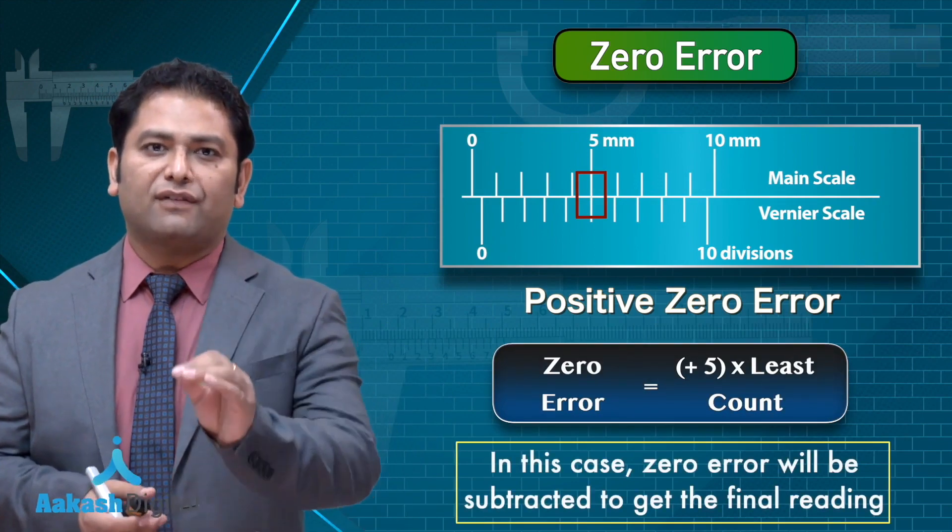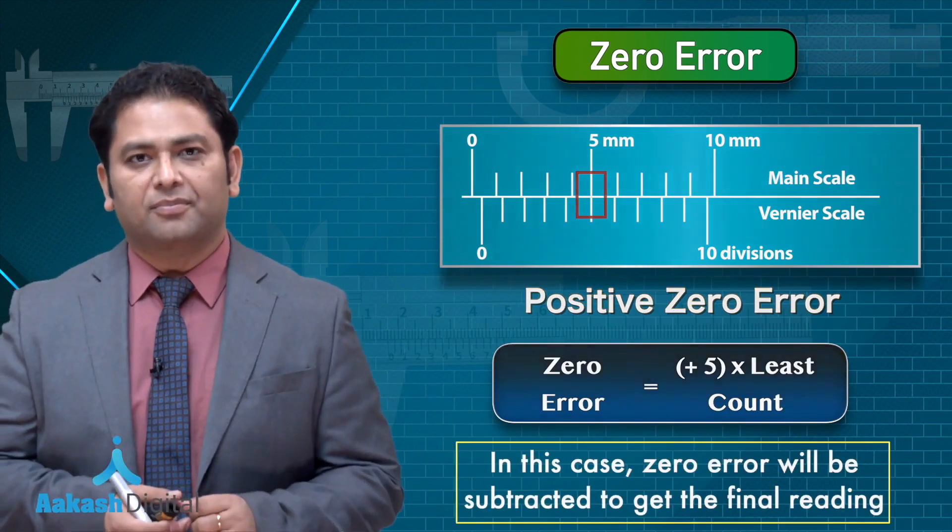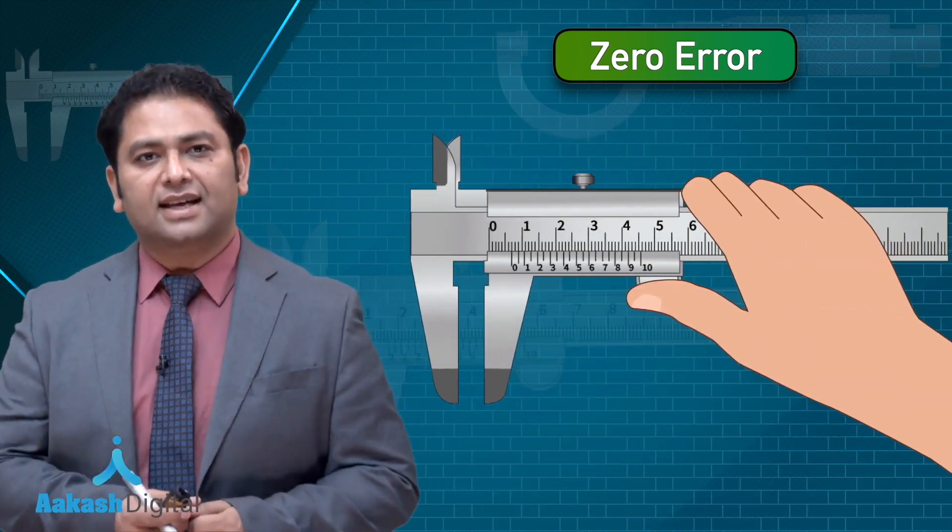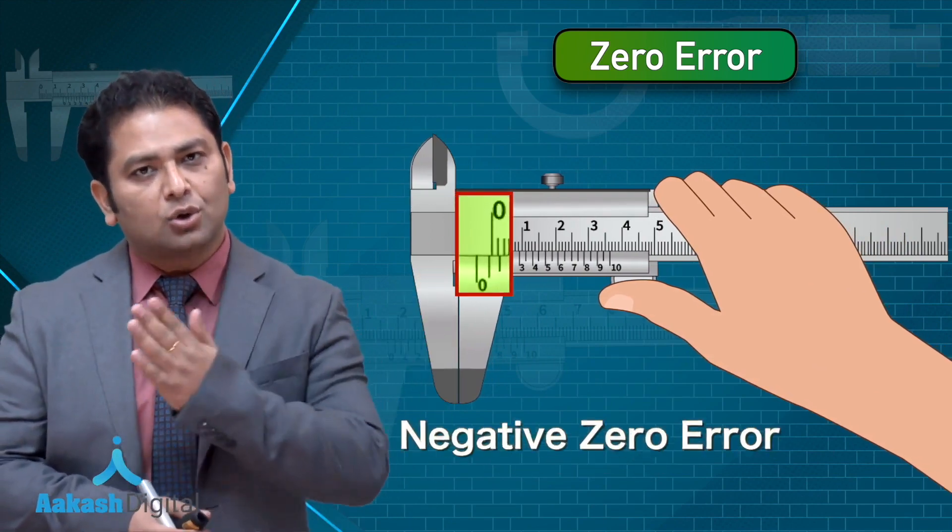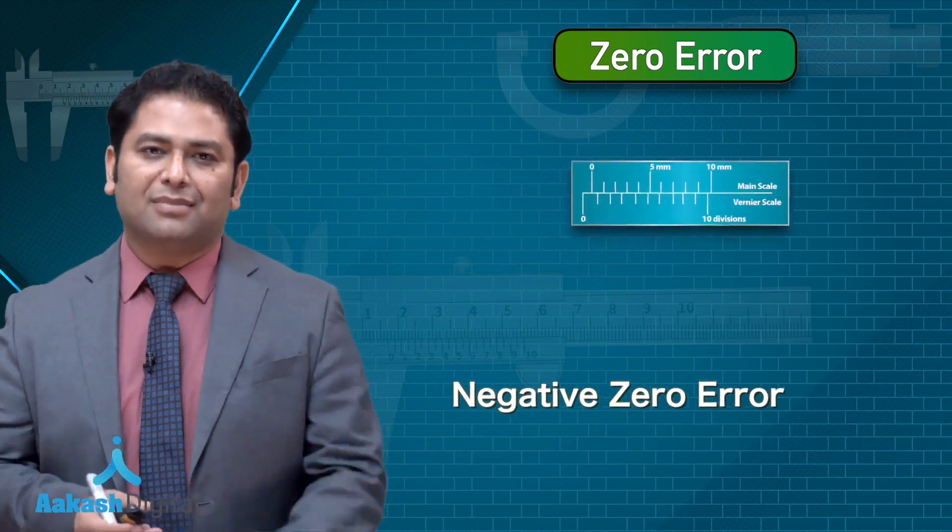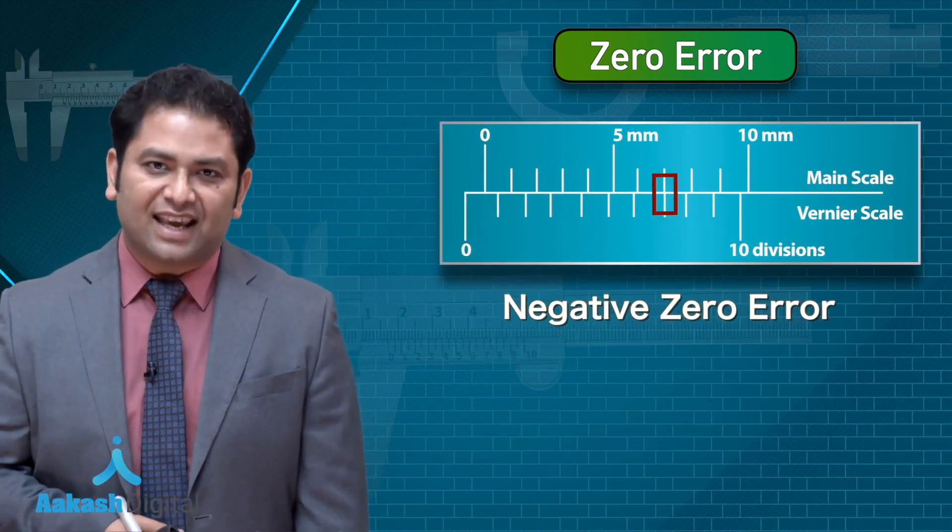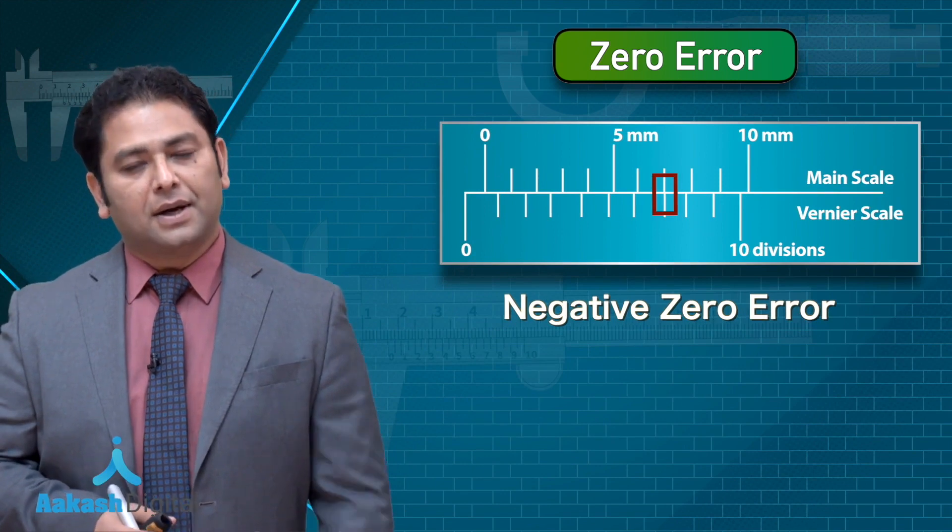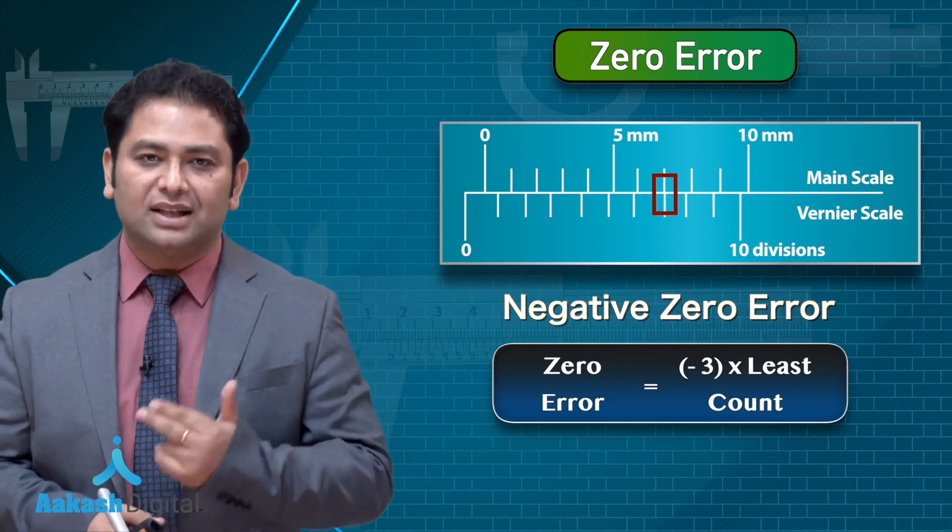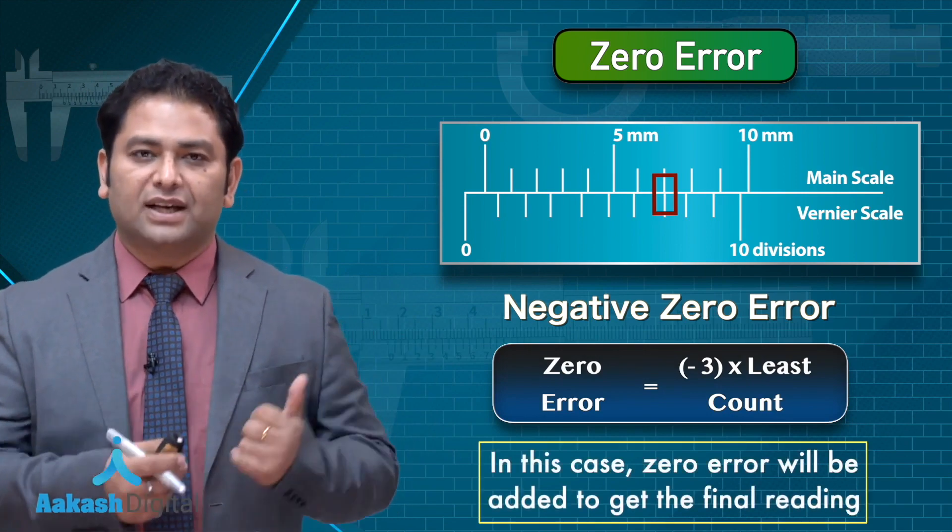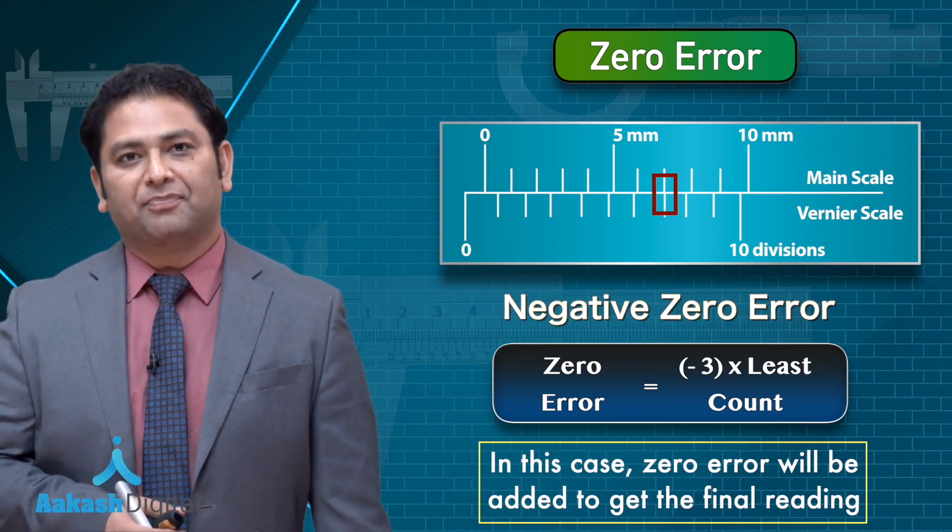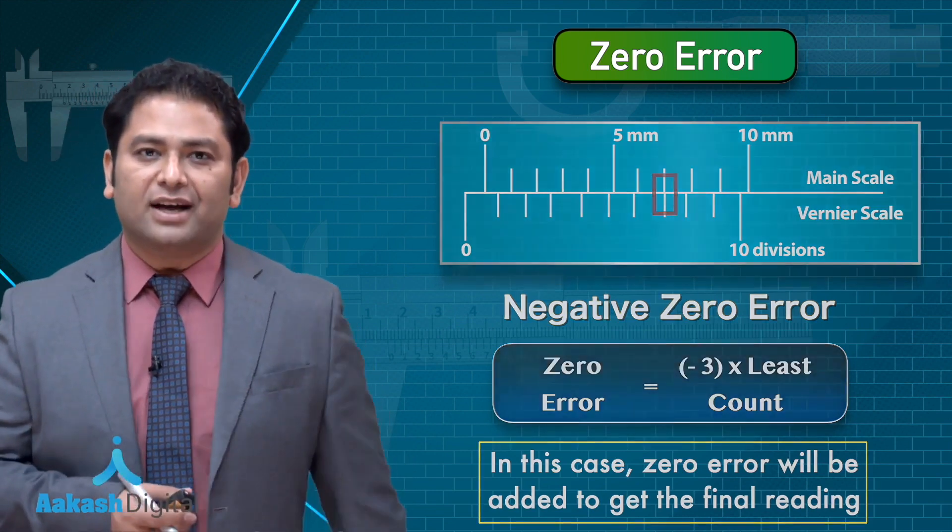Converse of this: while you slide the Vernier scale, it overshoots and goes beyond the zero of main. This time let us say the seventh Vernier scale coincides with the main. Be careful—the zero error here would be minus three into least count, because we have taken the total number of Vernier divisions as 10.